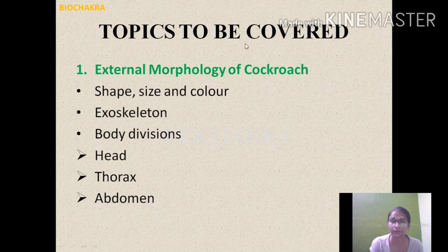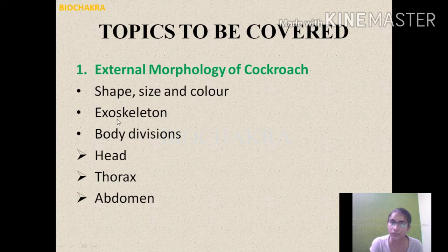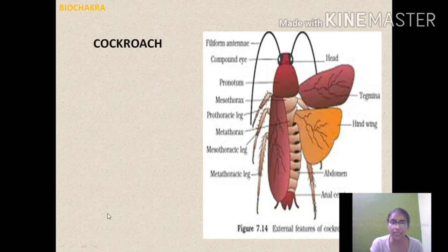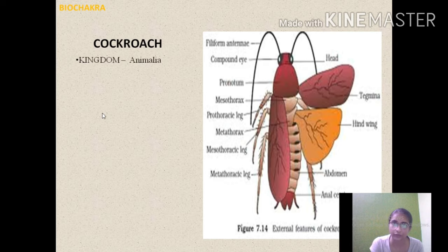The topics we will study about the cockroach are as follows: external morphology of the cockroach, which will include shape, size, and color; exoskeleton; and body divisions — head, thorax, and abdomen. Let's begin. First we will look at the general classification of the cockroach. The kingdom is Animalia, phylum is Arthropoda.